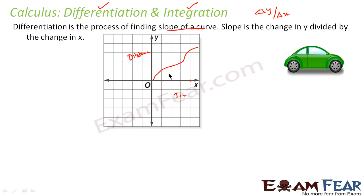Speed is nothing but change in distance by change in time — that is Δx/Δt. I am talking about the instantaneous speed at that point. If you have this distance-time graph, you just find the slope at that point. The slope of the graph at that point is the instantaneous speed, and that is determined using differentiation.